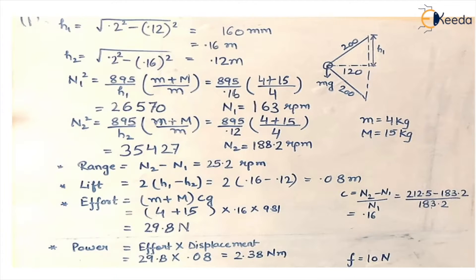We'll draw a simple diagram. We know the length of the arms, both the arms is 200 mm and we'll take the first case in which radius of rotation is 120 mm. So we'll call this as height h1. By applying Pythagoras theorem in this formula, we'll get the value of h1 which is 160 mm or 0.16 meter.